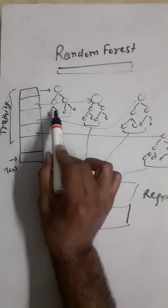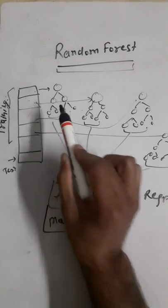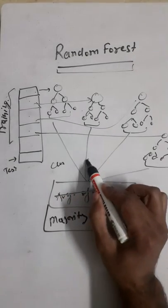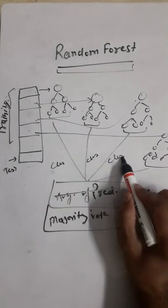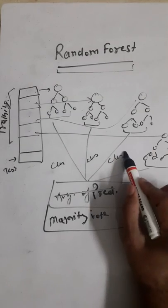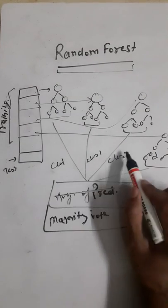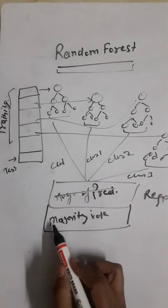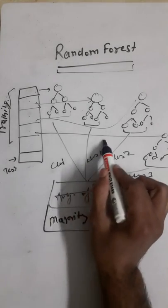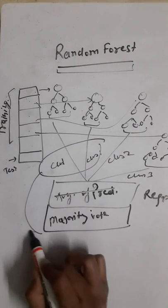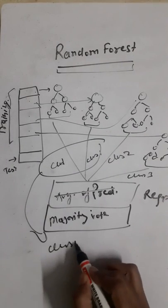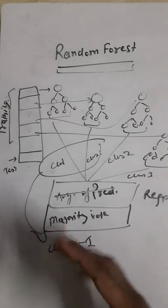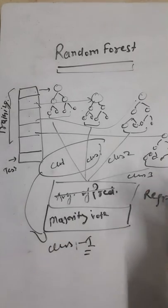Let's say my decision tree one has predicted class one, this tree also predicted class one, this tree predicted class two, and this has class three. Out of these predictions, I'm going to take class one since it has the maximum number of votes. So this is generally how Random Forest actually works.